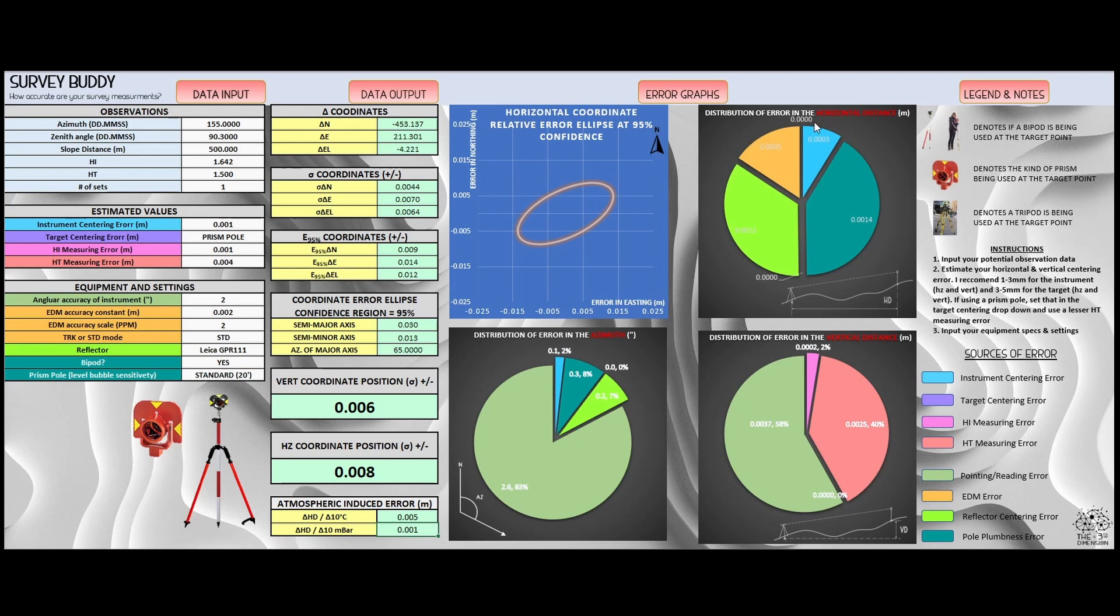For example, for the horizontal distance, we can see that 1.2 mils of the total error is coming from the reflector centering. 1.4 mils of the total error is coming from the pole plumbness error. For the azimuth, 2.6 seconds of the total error, or 83 percent, is coming from the pointing and reading error. Say if we wanted to reduce this 2.6 seconds, there's basically two ways we could do that: we could increase the amount of observations, or we could use a better instrument.